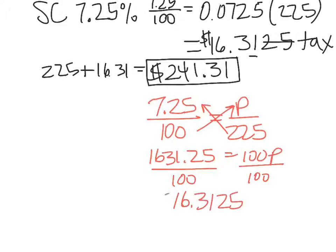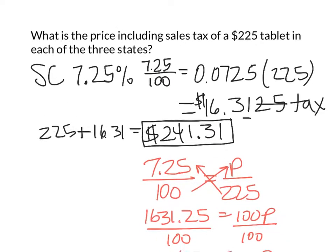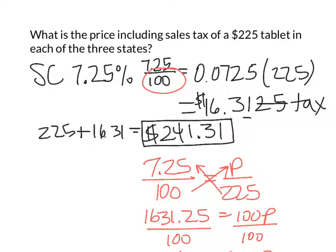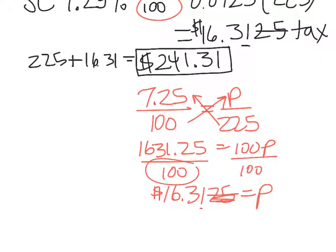And then we would divide both sides by 100 to isolate p. And we would get 16.3125. And again, this is your sales tax. We want to round, and the 25 just truncates. But notice, we did divide by 100, just like we did up here. We just didn't do it until the end.